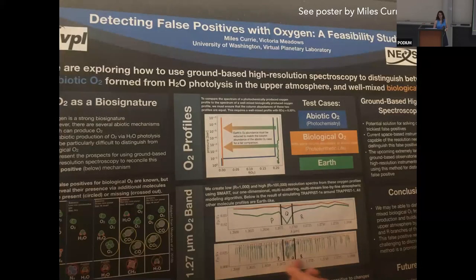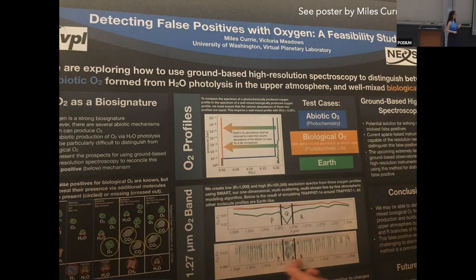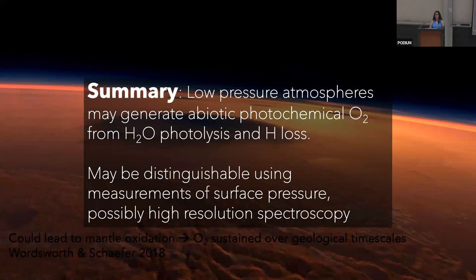We may also be able to use oxygen dimer features — this one at around 4 microns from Eddie Schwieterman's work — which are collisionally-induced absorption features very sensitive to the amount of gas in the atmosphere. Assuming N2 is the dominant background gas, you might say something about the planet's pressure from this feature. Additionally, there's a poster by Miles Curry from the University of Washington showing how high-resolution spectra might diagnose this false positive by revealing the vertical profile of oxygen, with more oxygen high up than deep down.